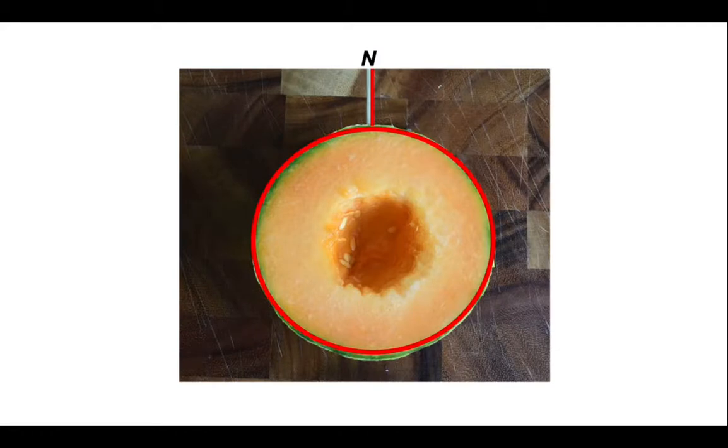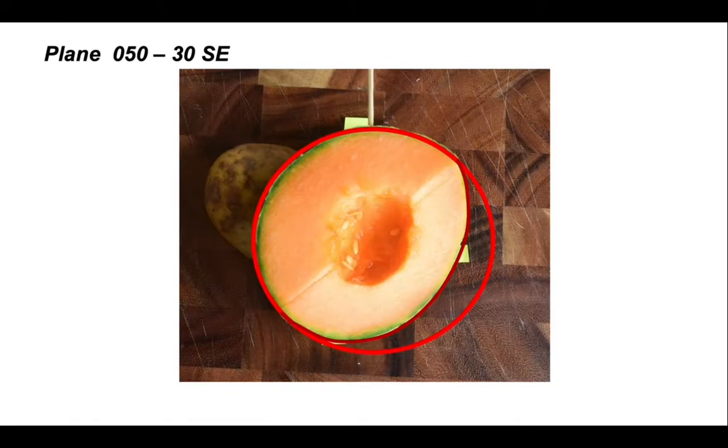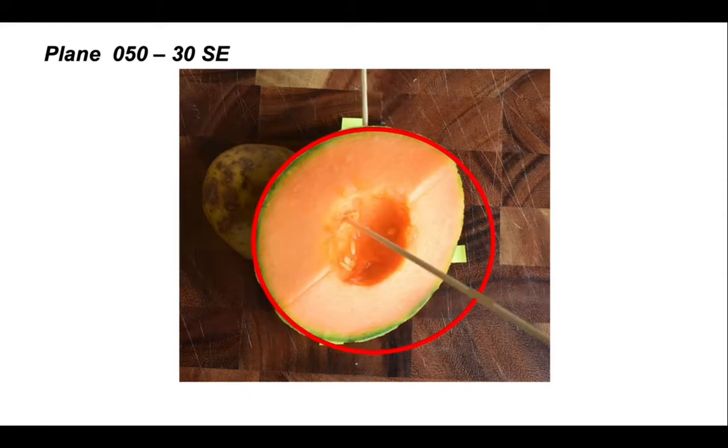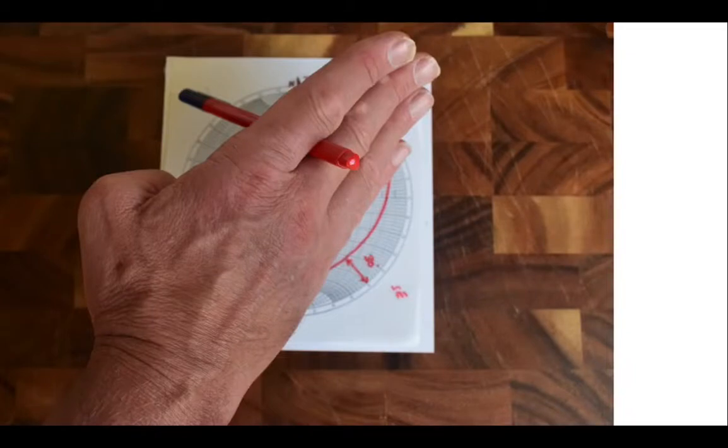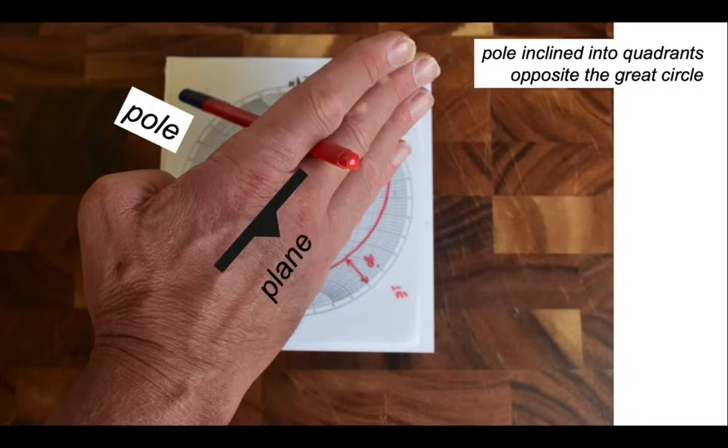Let's go back to our melon and try and look at some visualization again. Here is our original plane that we cut, which is 050 30 dipping towards the southeast. Its pole goes down here, inclined off to the opposite quadrant. We can perhaps visualize this in another way. Imagine that the back of my hand here is the plane, with its strike running along parallel to my fingers, dipping down towards the tabletop. The pole, represented by the pen, is inclined through my hand into the opposite quadrant to the plane of the back of my hand. So the pole will plot our stereonet into a quadrant opposite the great circle that represents its plane.